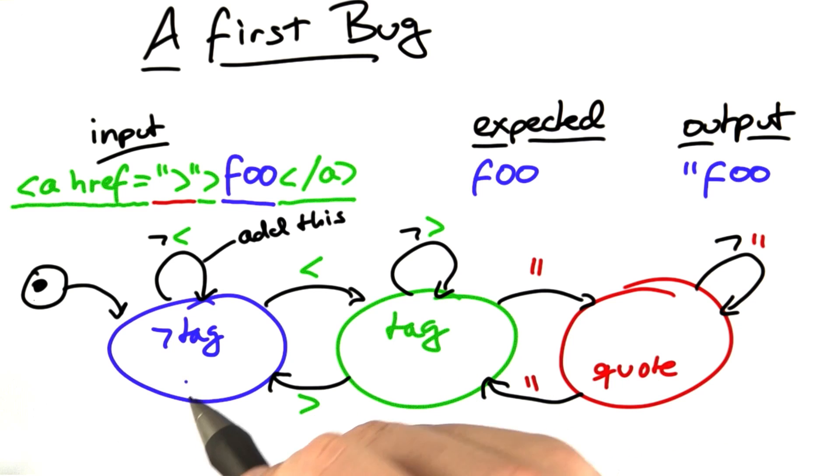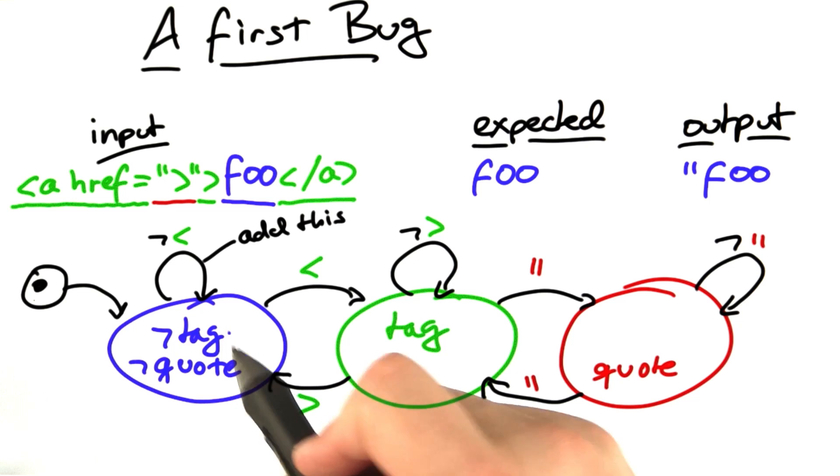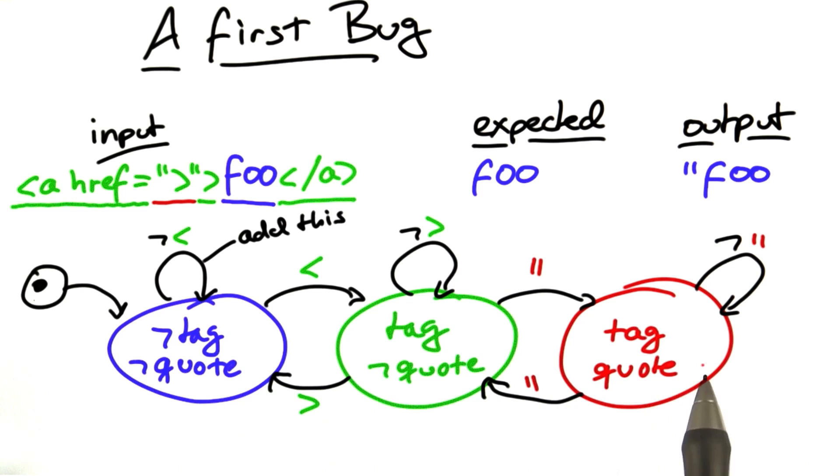So in order to implement this, we're going to use two variables, one variable tag and one variable quote to indicate the three different states our program can be in.